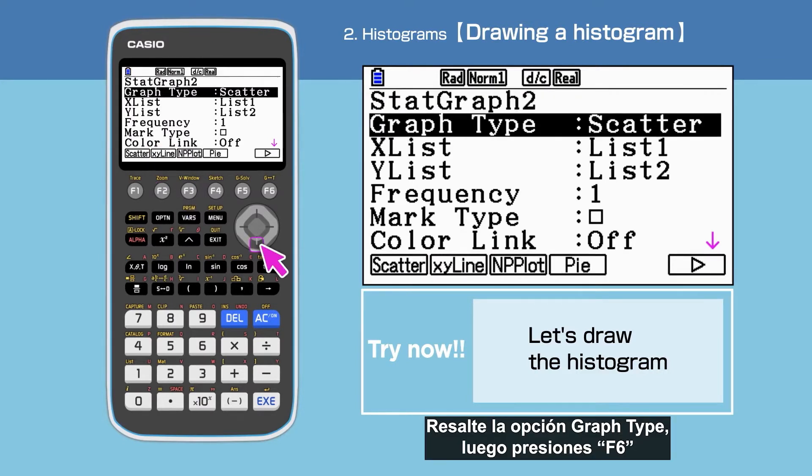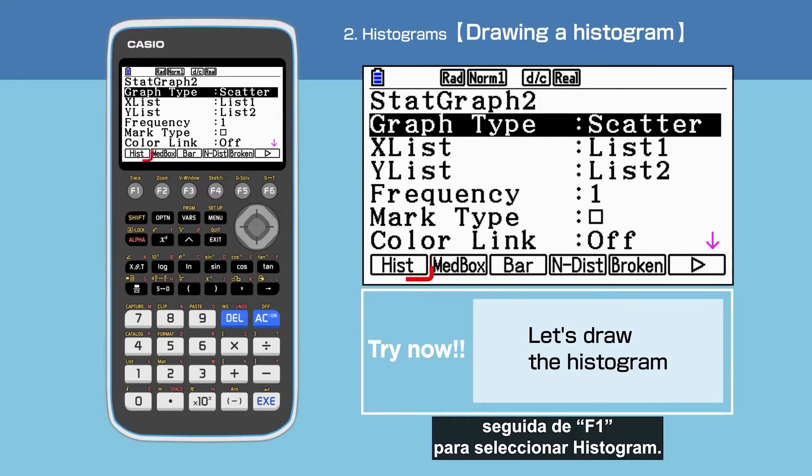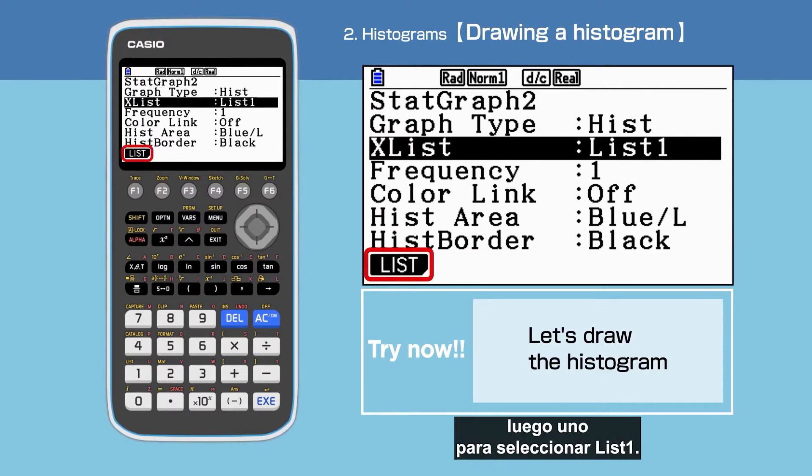Highlight Graph Type, then press F6 followed by F1 to select Histogram. For the X list, press F1, then F1 to select list 1.